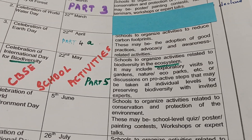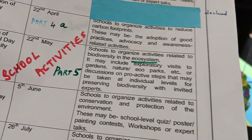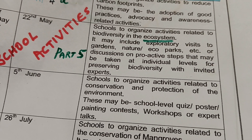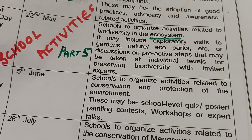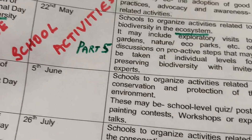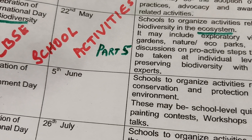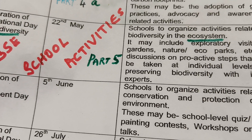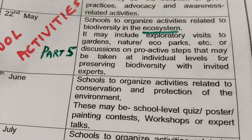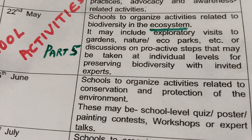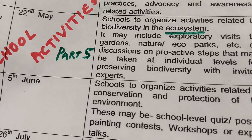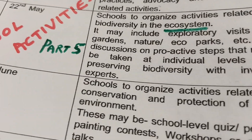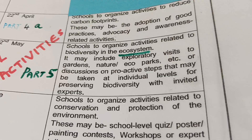Now comes the biodiversity celebration. What is biodiversity, and what activities should schools organize related to biodiversity in the ecosystem? It may include exploratory visits to gardens, nature ecoparks, discussions on proactive steps that may be taken at individual levels. Sessions with invited experts can be held in schools to give awareness to children and the community regarding ecosystem conservation.